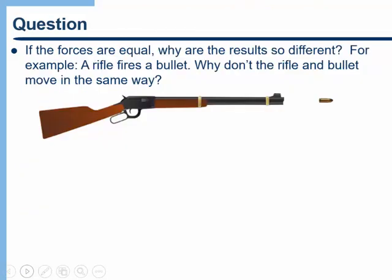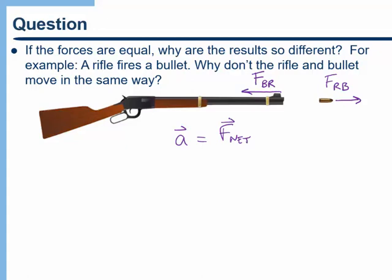Here's another conceptual question: if the forces are equal, why are the results so different? For example, a rifle fires a bullet — why don't the rifle and the bullet move in the same way? The force that the rifle exerts on the bullet is F_RB, and the bullet exerts an equal and opposite force on the rifle, F_BR. We know the magnitude of those two forces is the same. Well, the answer is Newton's second law: just because two objects experience the same net force doesn't mean they'll have the same acceleration, because they have different masses.